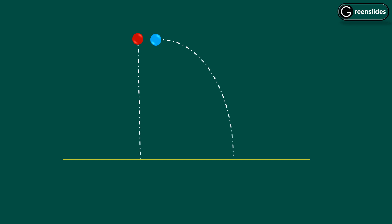Here is a question for you. There are two balls kept at the same height. One is dropped and the other is given a horizontal velocity, following different paths. If the red one takes time t1 and the blue one takes time t2 to touch the ground, the relation between them is t1 = t2. It looks like t2 should be greater than t1, but they are equal. Figure out how and why, and drop the answer in the comment box.